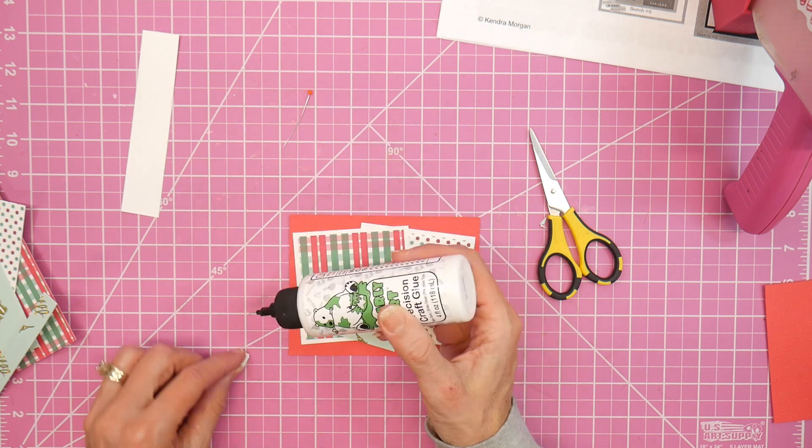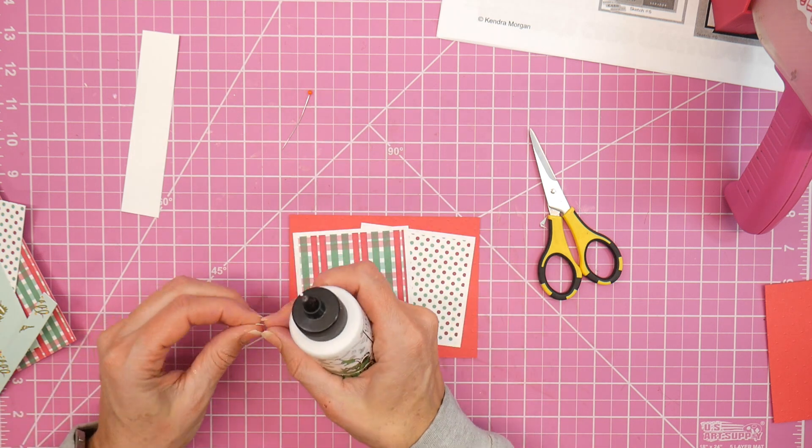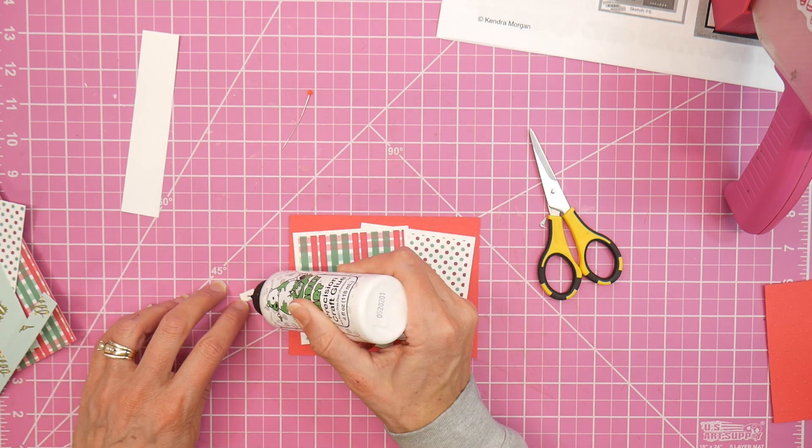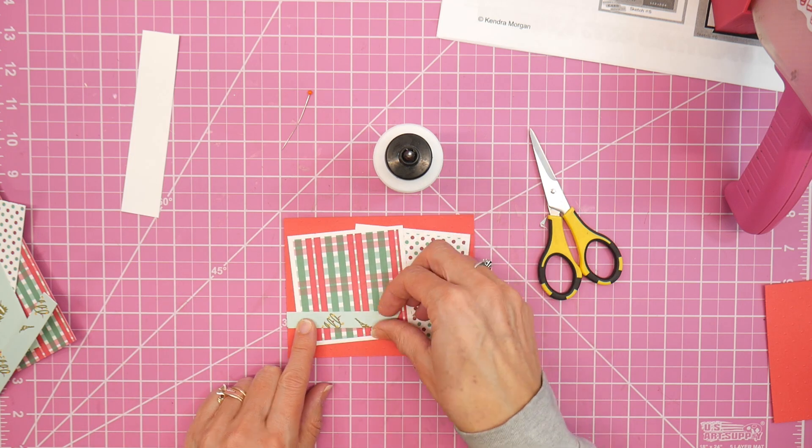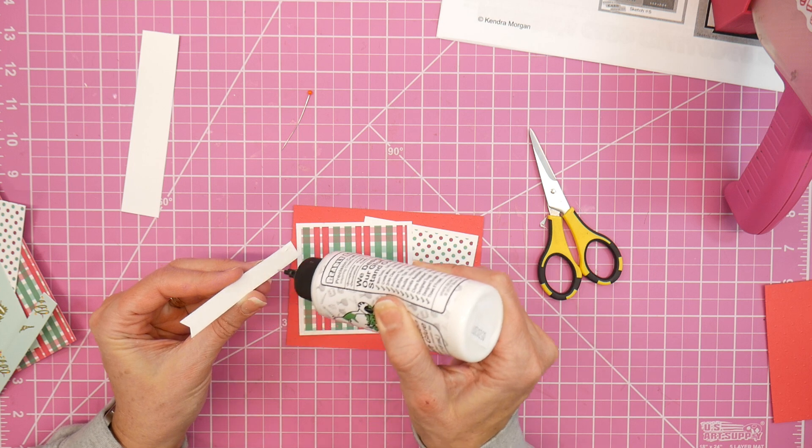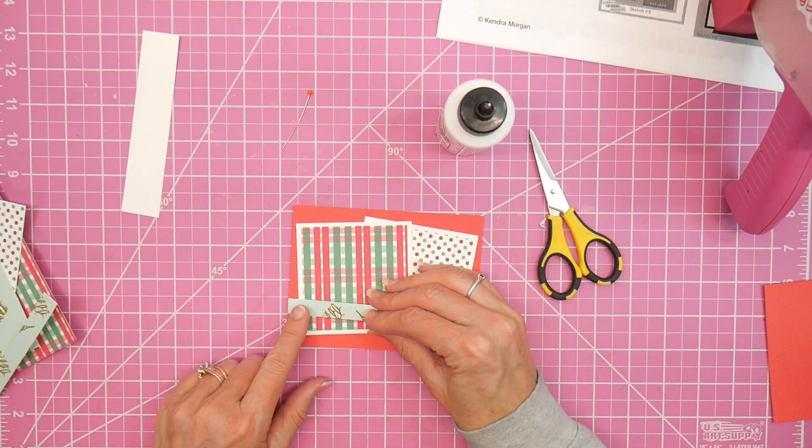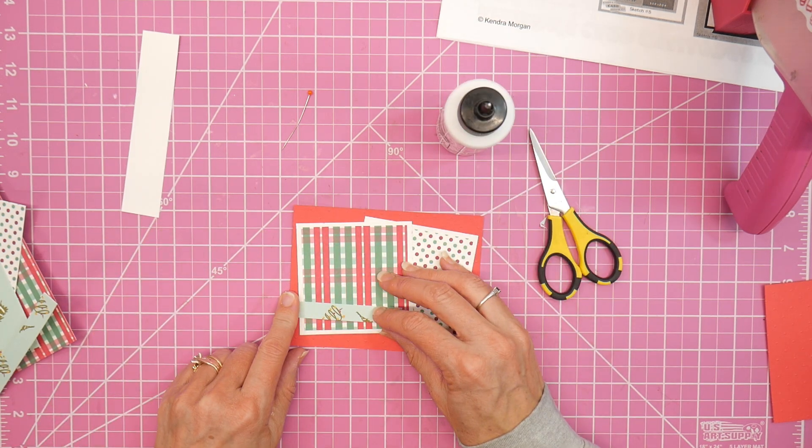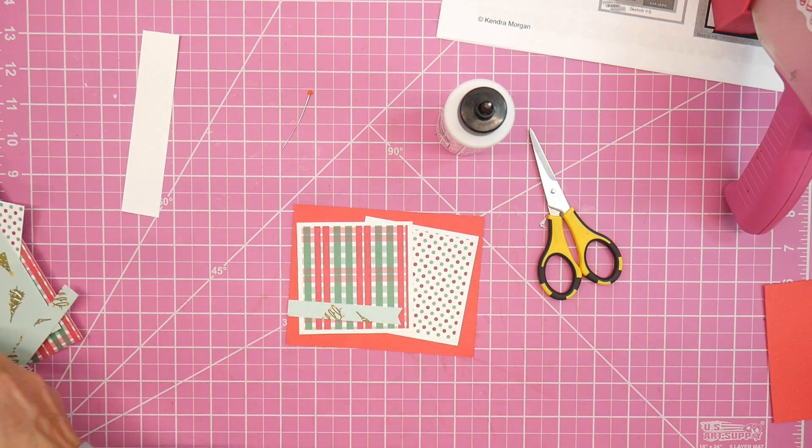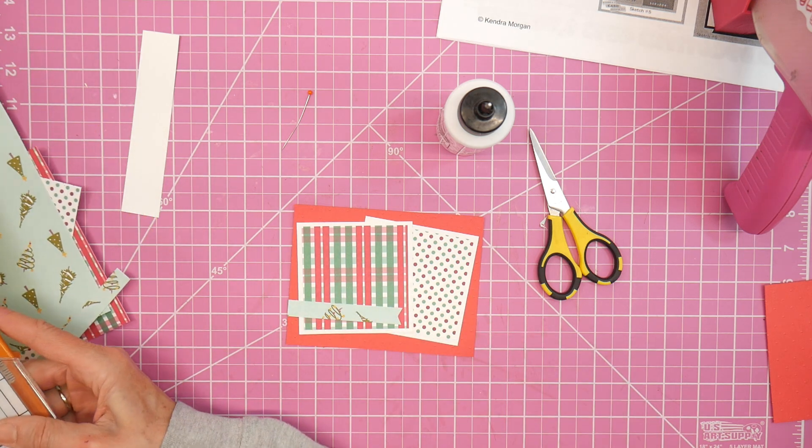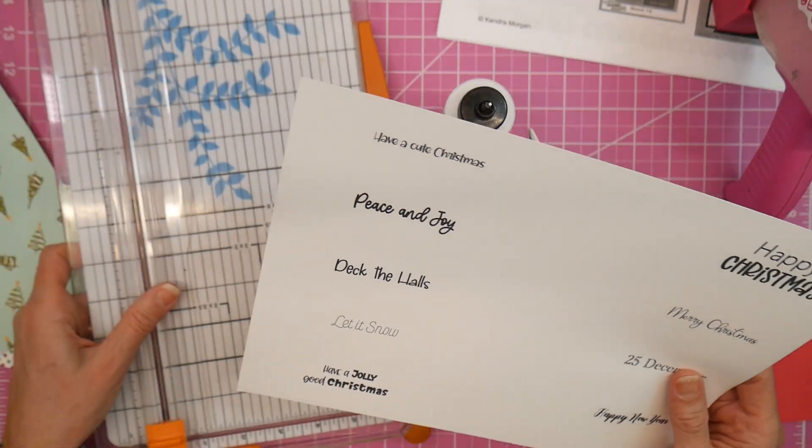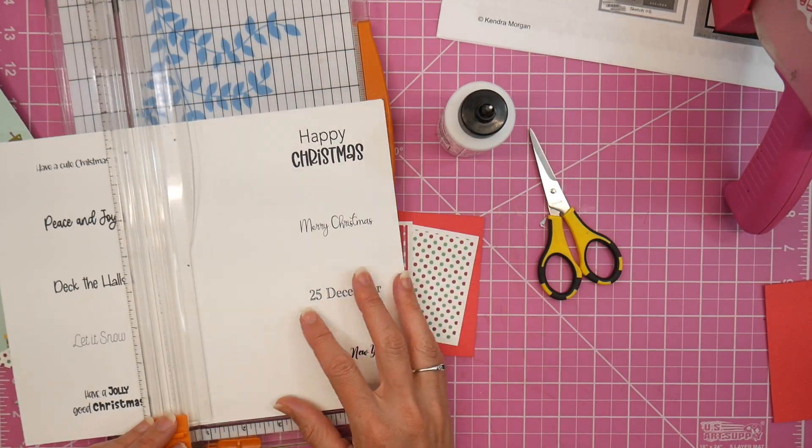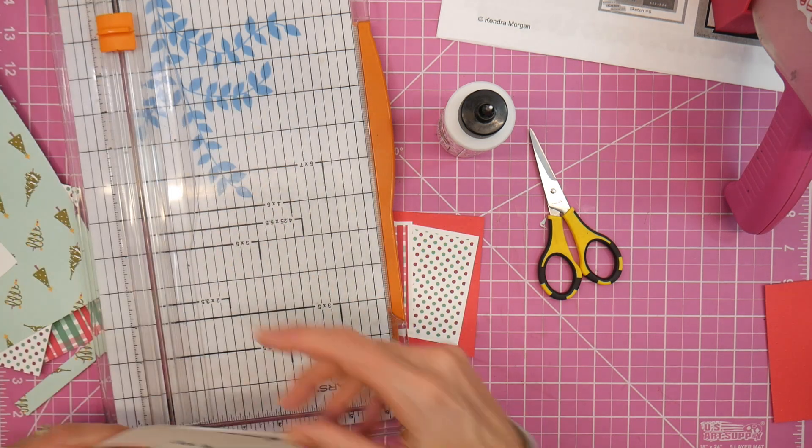There you can see me adding some of those little scrap white layers to the left side so that the banner will lay flat. And then I do layer my sentiment on some of the red - more of that red cardstock. And I decided to go with 'have a holly jolly Christmas' as my sentiment for this one, so I just trim it down and layer it up.